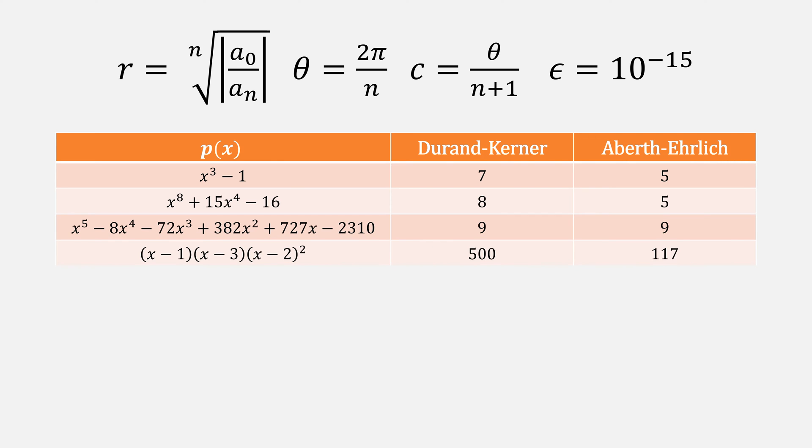With some multiplicity, you can really tell how much Durand-Kerner suffers, and Aberth-Ehrlich still does so somewhat, but not nearly as badly.